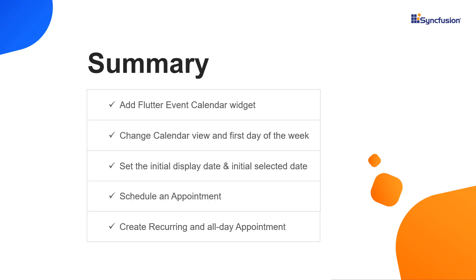That's it. Let me summarize the main points. You saw how to add the Syncfusion Flutter Event Calendar widget to a Flutter project. You learned how to change the calendar view and the first day of the week, and how to set the initial display date. You also learned how to set an initial selected date in the calendar and how to schedule appointments. Finally, I explained how to create a recurring appointment and an all-day appointment. You can download this working example from the GitHub link in the video description below. You can also check if you are eligible for our community license, which gives you a free license key to use our Flutter products. If you found this video useful, click the like button and subscribe to our channel to get notifications about new videos.